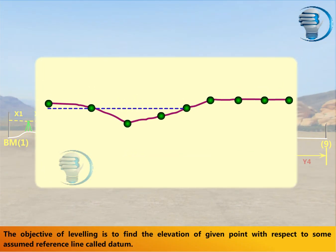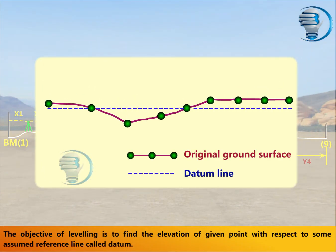The objective of leveling is to find the elevation of a given point with respect to some assumed reference line called datum.